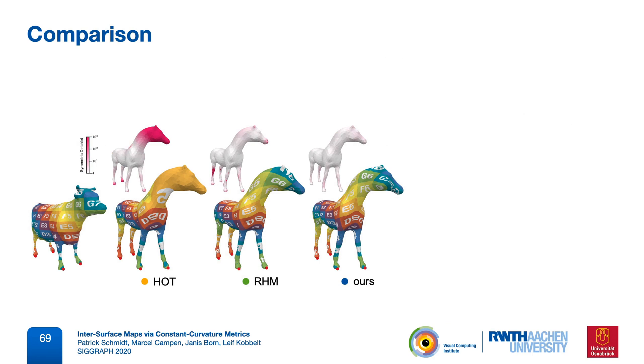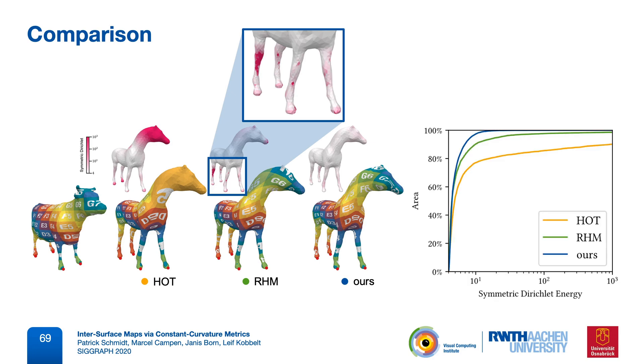Here is another example with no landmarks on the head of the horse. This time RHM does achieve correct alignment, but still produces small regions with high distortion, which are not present in our result. This also shows quantitatively when we plot the percentage of surface area that is below a certain distortion threshold. So we want this curve to be in the upper left corner as far as possible.